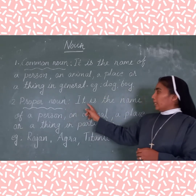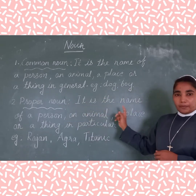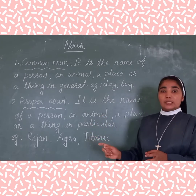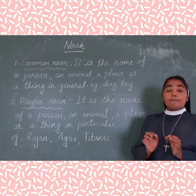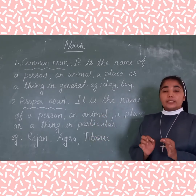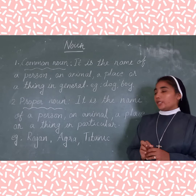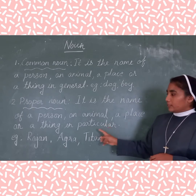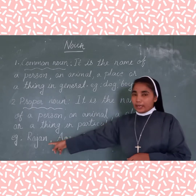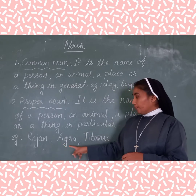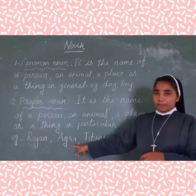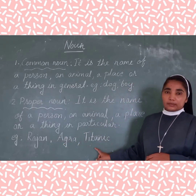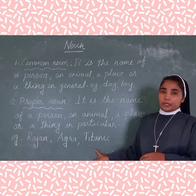Next one, proper noun. It is the name of a person, animal, thing or places in particular. It is a special name. For example, Rajen — it is a particular name. Angra — a place name. Chai Chai — this is a thing, a specific name.